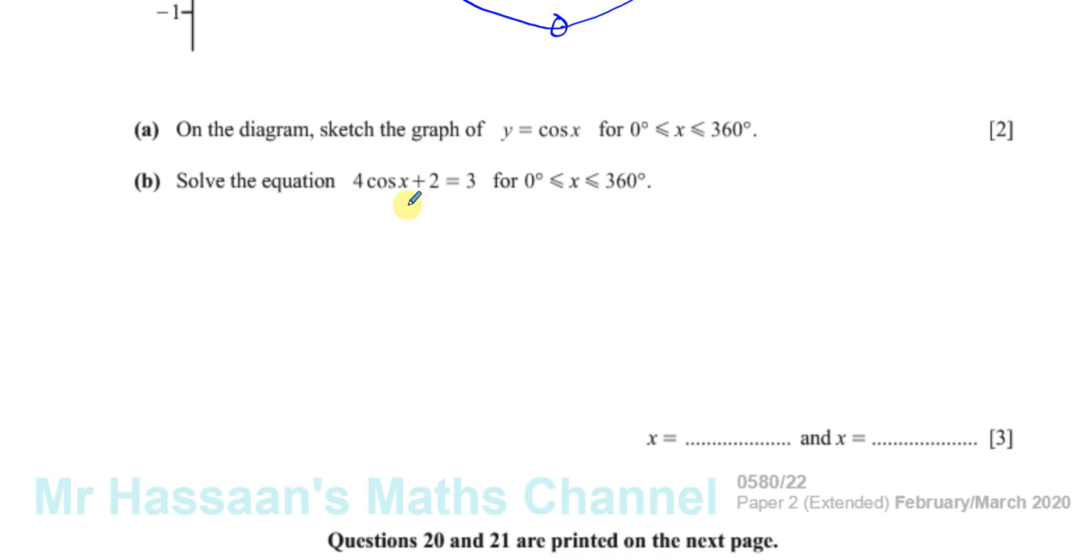So the first thing we've got to do is make cos x the subject of this. So you have 4 cos x + 2 = 3. Take away 2 from both sides, so 4 cos x = 1. And then divide by 4, so you have cos x = 1/4.